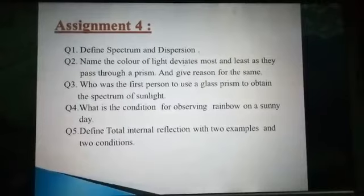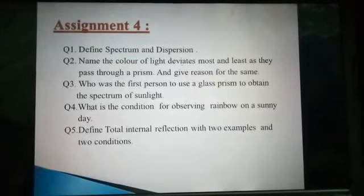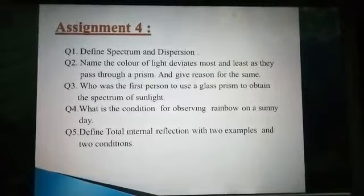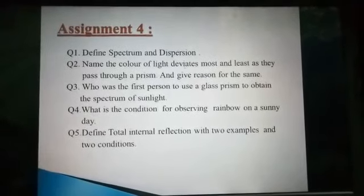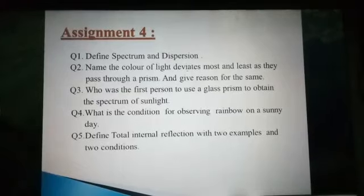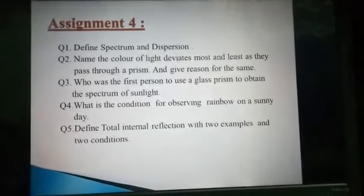Assignment four is waiting for you. Question one: define spectrum and dispersion. Question two: name the color of light that deviates most and least through a prism, and give reasons. Question three: who was the first person to perform this experiment? Question four: what is the condition for observing a rainbow on a sunny day? Question five: define total internal reflection with two examples and two conditions. Complete the homework and submit in the group. Thank you.